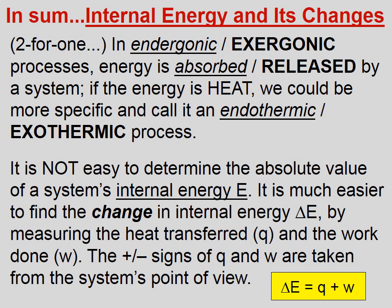Let's summarize. In endergonic processes, energy is absorbed by a system. If the energy is heat, we could be more specific and call it an endothermic process. In exergonic processes, energy is released by a system. If the energy is heat, we could be more specific and call it an exothermic process.